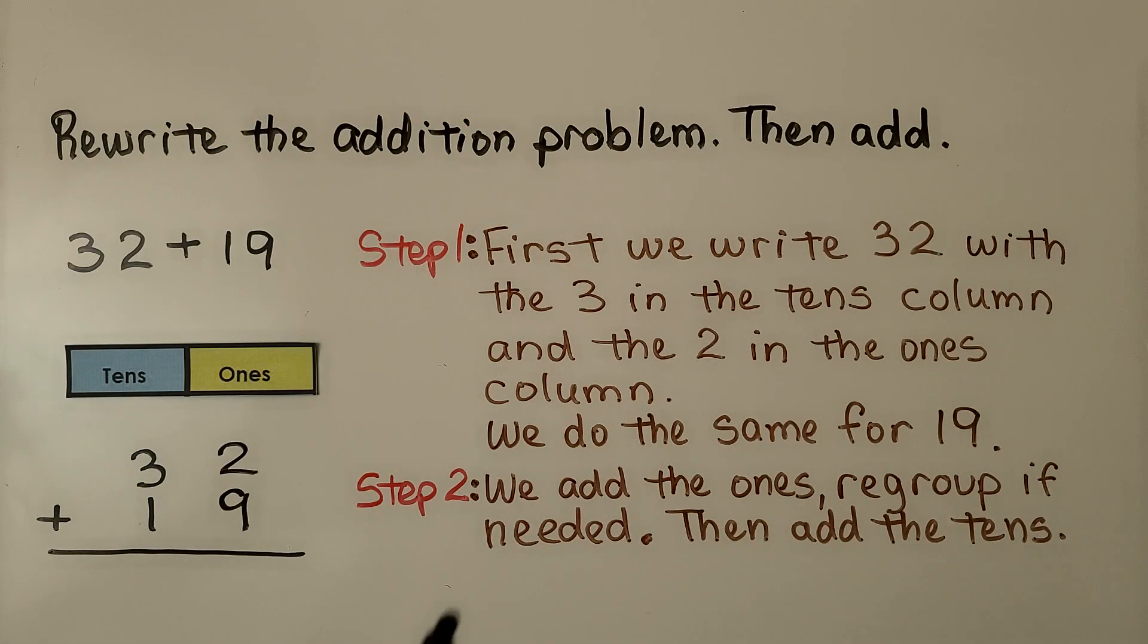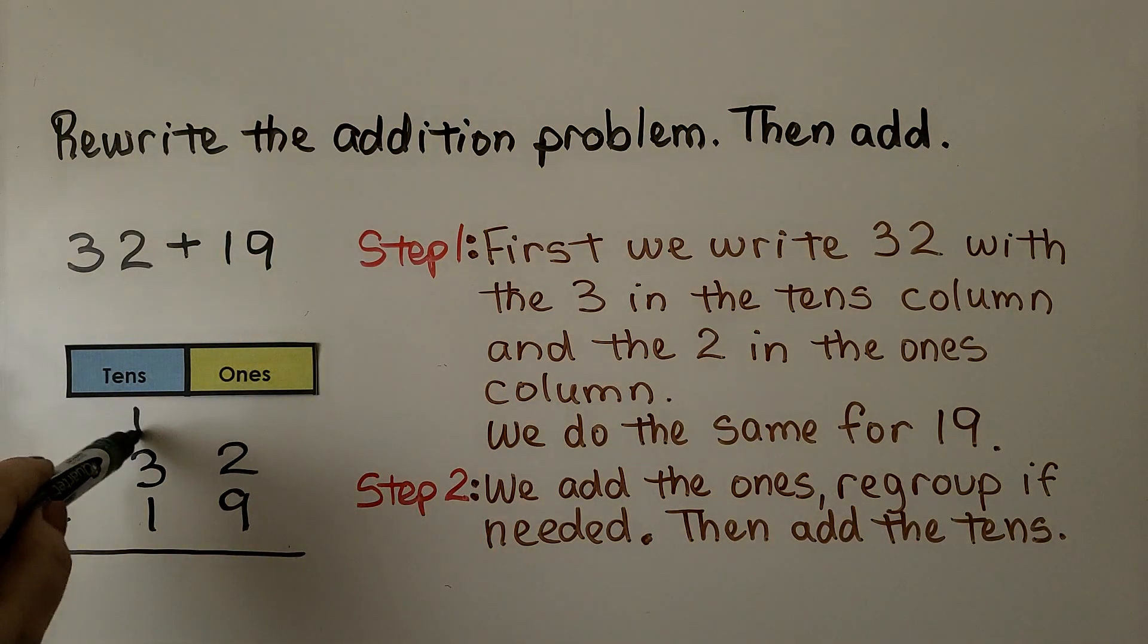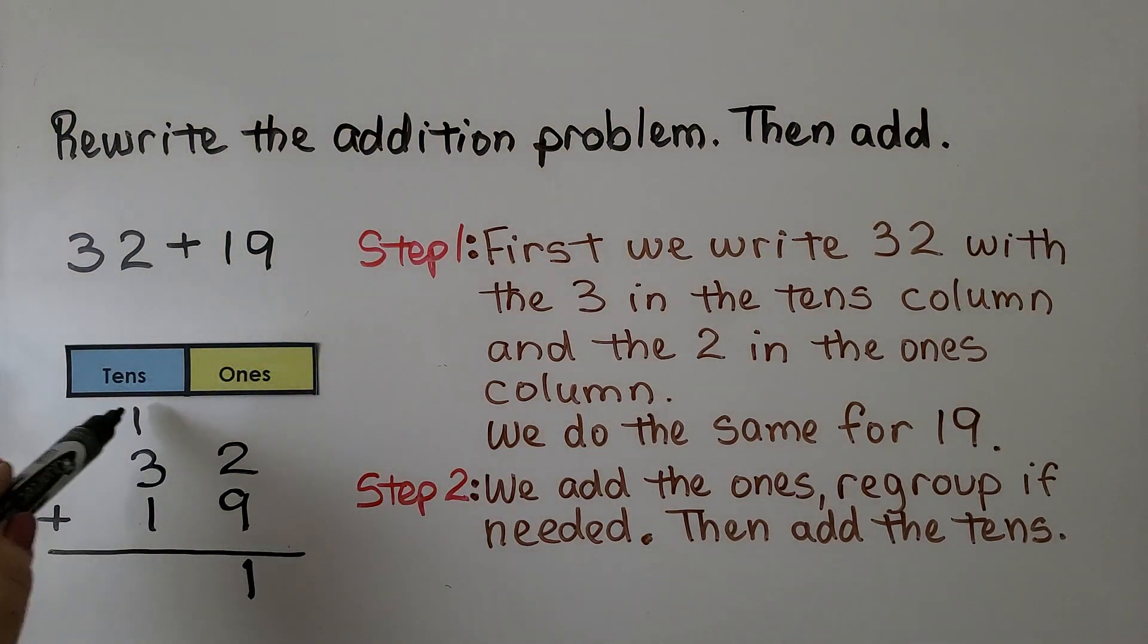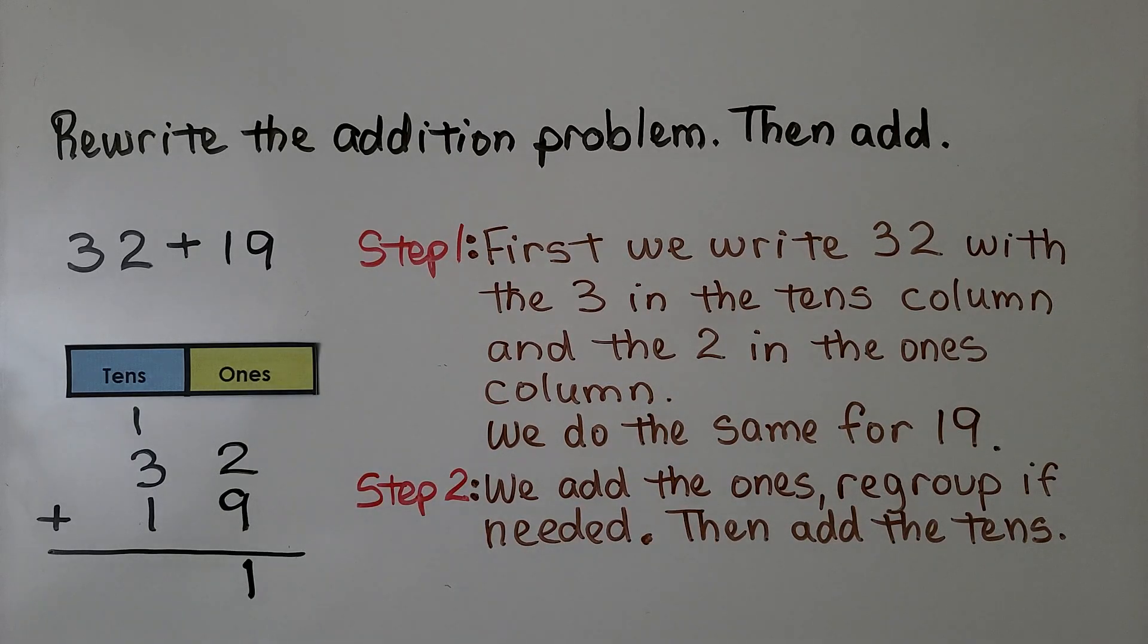The next thing we do, step 2, is we add the ones. 9 plus 2 is equal to 11. 11 is 1 ten and 1 one. We regroup the 1 ten into the tens column and write the 1 in the ones column.